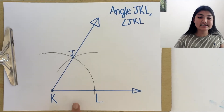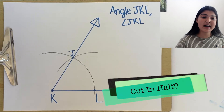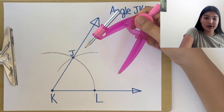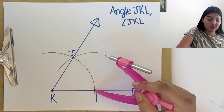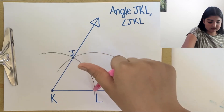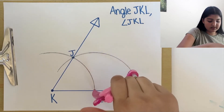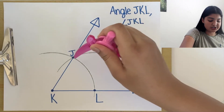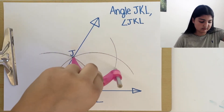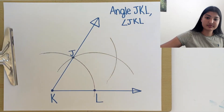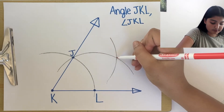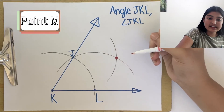Now we've drawn a 60 degree angle, but how can we bisect it? Well, we can bisect it using our compass. Taking the same measurement on the compass, place one point or the leg of the compass on L and make an arc. Then, take the leg of the compass and place it on J, making another arc. As you can see, these two arcs intersect at a point. Let's label it as N.